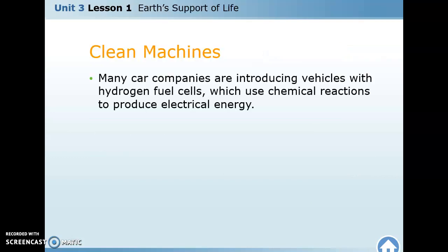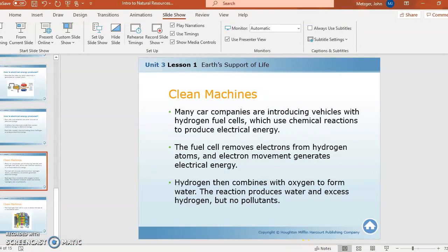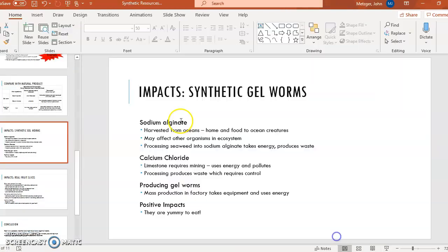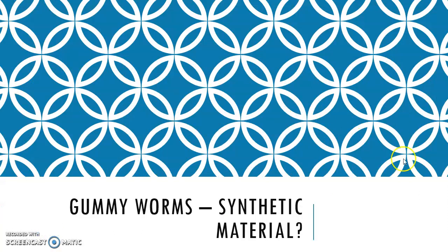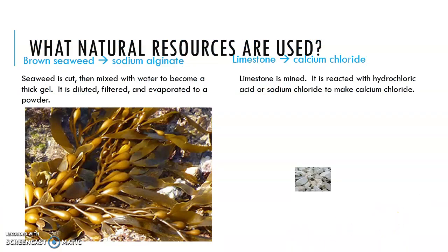Now let's look at synthetic resources. A natural resource is something we just take from the earth and use, while a synthetic resource is something we take from the earth and then alter in some way. A good example is gummy worms — you don't find gummy worms naturally growing in the ground or floating in the ocean. We actually get these from natural resources: we take seaweed and limestone.